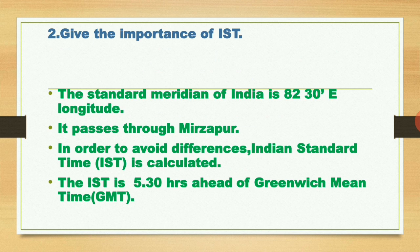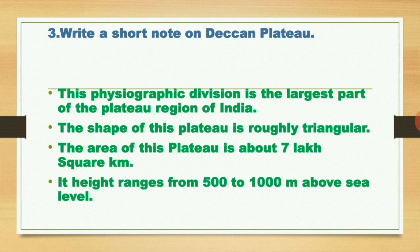In order to avoid differences, Indian Standard Time (IST) is calculated. The IST is five and a half hours ahead of Greenwich Mean Time. There are five and a half hours of difference between Indian Standard Time and Greenwich Mean Time.